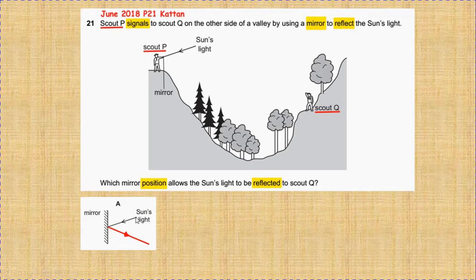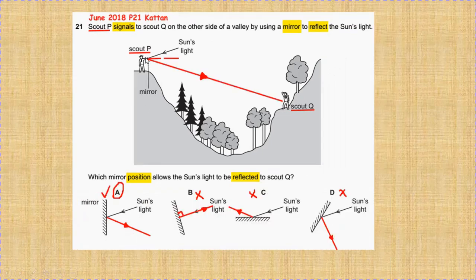For A, if scout P is holding the mirror in a perpendicular position similar to the one in A, the sun's light is reflected directly to scout Q, which is correct.